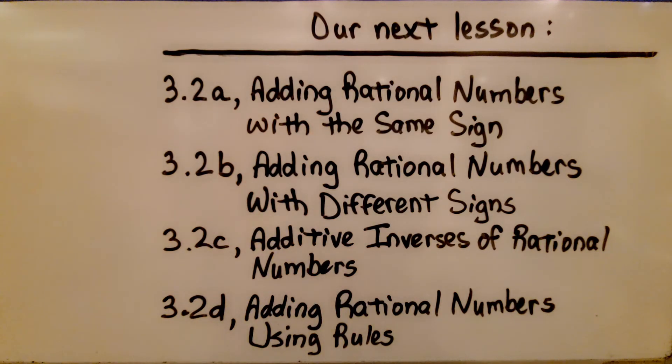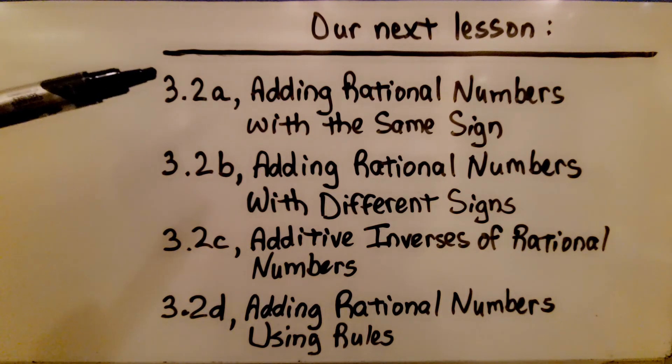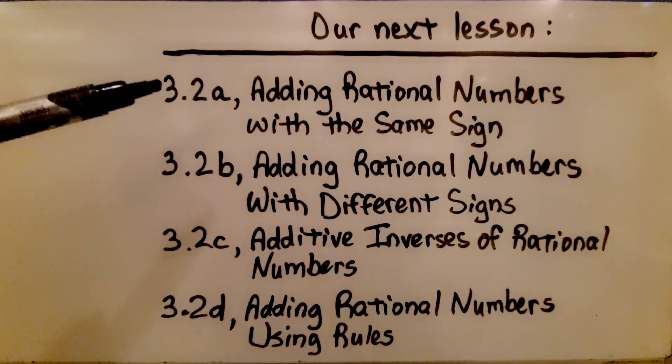So we're finished with lesson 3.1, and I really hope you understand about using long division to write a fraction or a mixed number as a decimal. 3.2 is split into four parts, and next we're going to do adding rational numbers with the same sign.